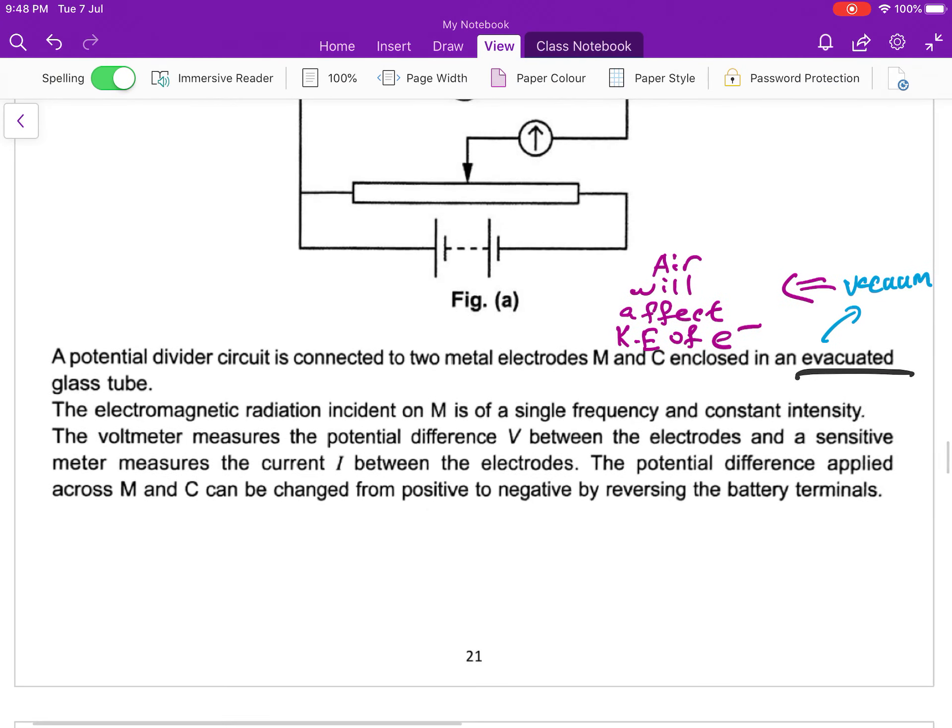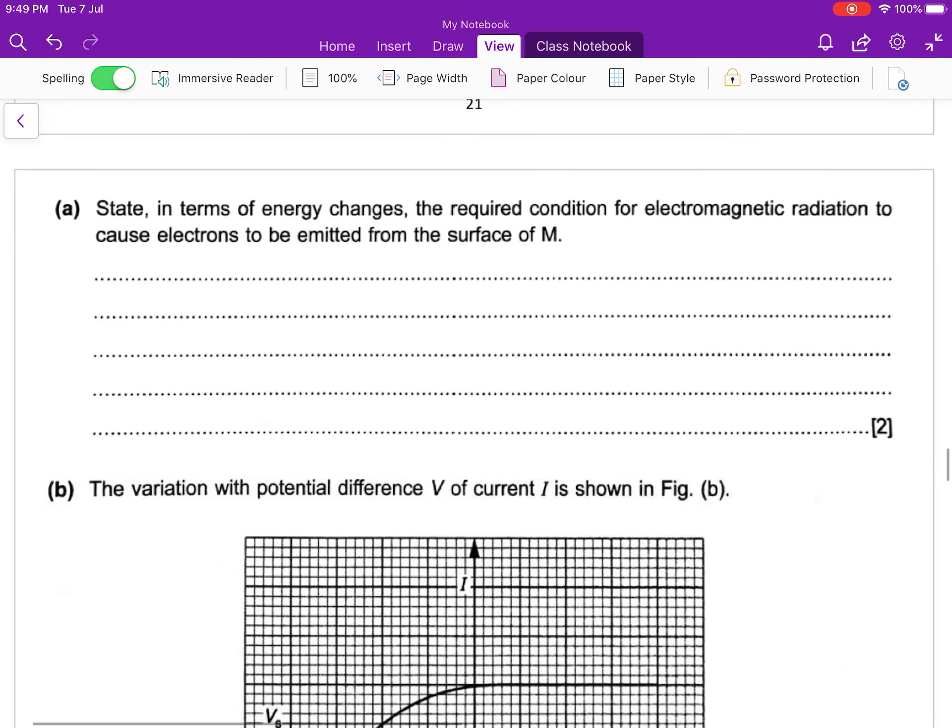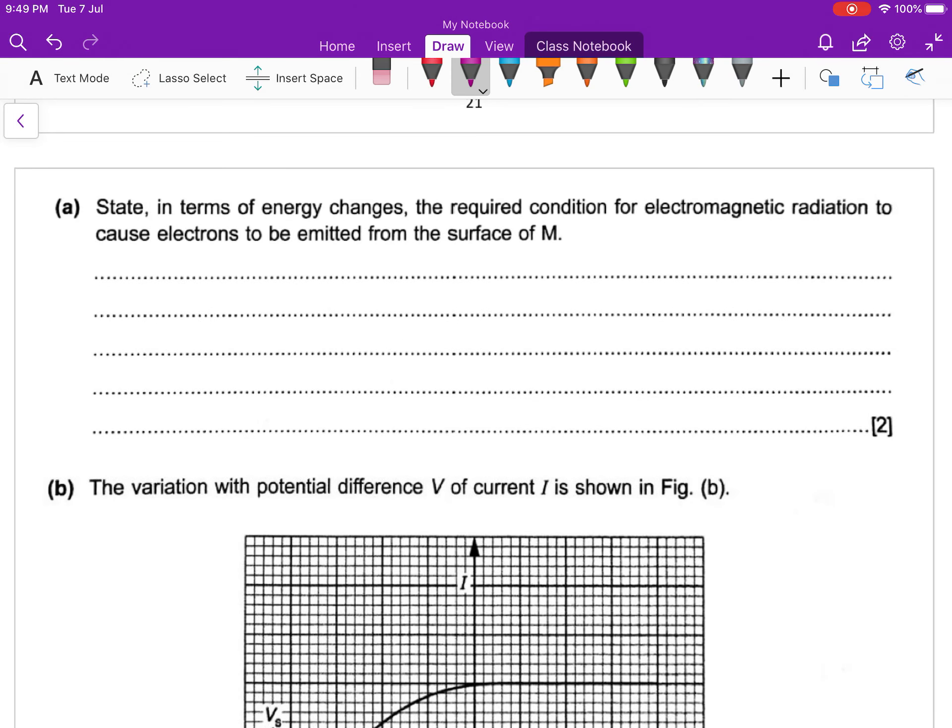The electromagnetic radiation incident on M is of single frequency and constant intensity. The voltmeter measures the potential difference between the electrodes and the sensitive meter measures the current between the electrodes. The potential difference applied across M and C can be changed from positive to negative. Part A: State, in terms of energy changes, the required condition for electromagnetic radiation to cause electrons to be emitted from the surface of M. This is photoelectric effect, so the energy of photon must be more or equal to work function energy.